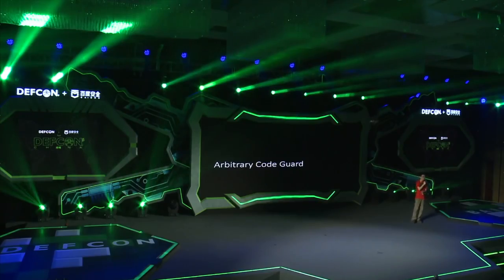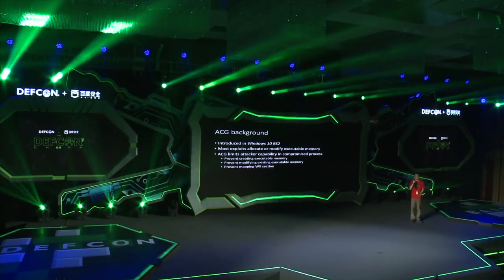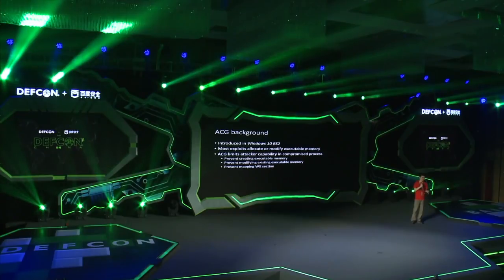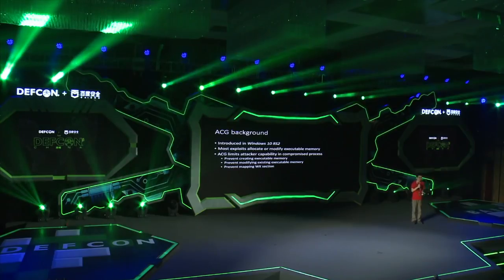Next I'm going to talk about Arbitrary Code Guard. Arbitrary Code Guard is introduced in Windows 10 Redstone 2. Today most exploits need to either allocate or modify executable memory. By limiting that behavior, Arbitrary Code Guard actually breaks most exploits available in the wild.